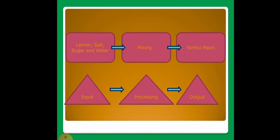So to make Nimbupani, you have to take lemon, salt, sugar and water. These are input. Next, mixing all these things. This is called processing. Then finally you will get Nimbupani, that is output. Got it children?